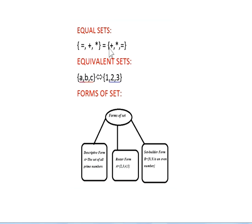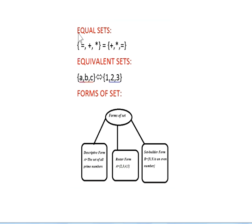Next one is equal sets. Equal sets means both sets have the same number of elements as well as the same elements. For example, here the elements are plus and star, and the other set also contains plus and star. Both sets have the same elements and both have 3 elements each. Therefore, this is called an equal set.